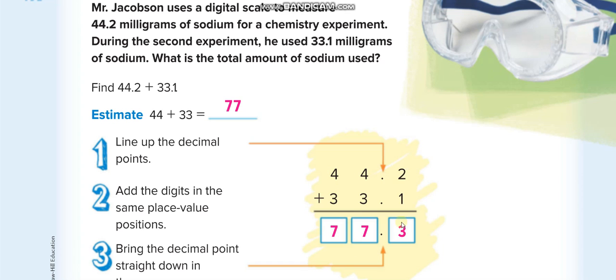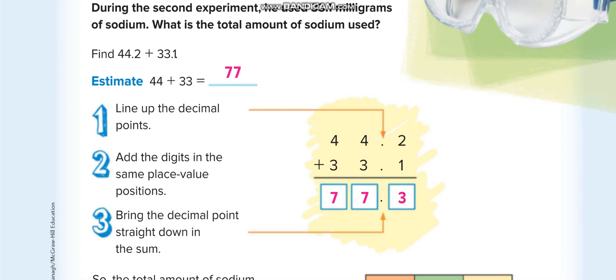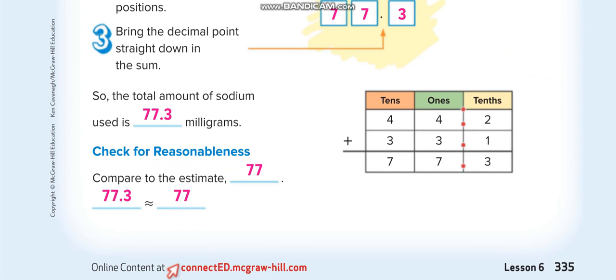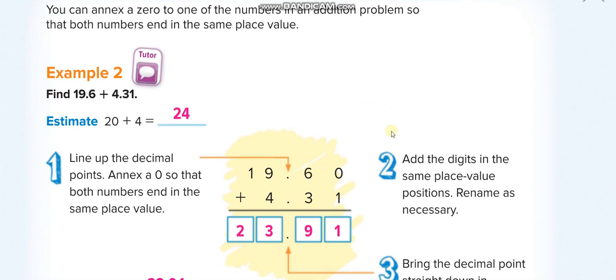We are adding 19.6, the estimate is 20, and 4.31, the estimate is 4, so the estimate is 24. Now when we add it in actual: 19.6 and 4.31.